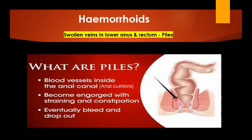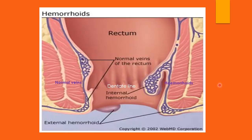Here is an anal canal with piles. They become engorged and dilated due to frequent straining at stools, and later they tend to bleed. This diagram shows a close-up view of hemorrhoids. On the left is the normal venous anatomy with an internal and external venous system. On the right, the veins have become dilated and tortuous, forming internal and external hemorrhoids. Internal piles occur inside the anal canal and are not easily visible outside.